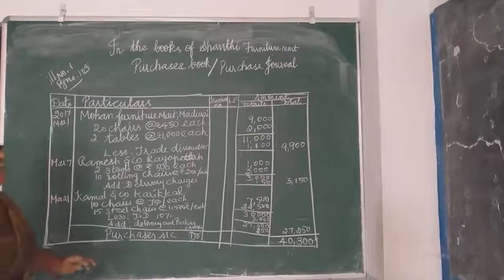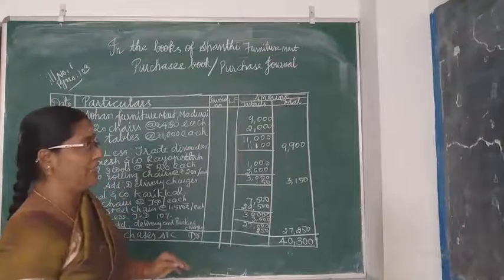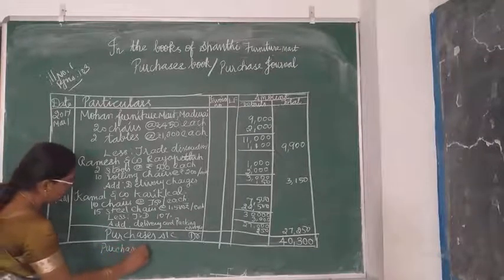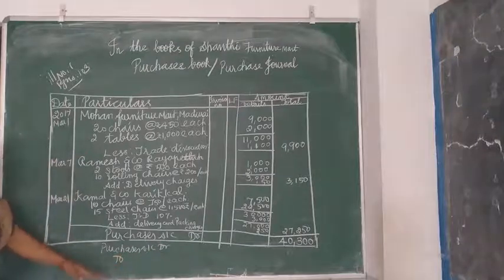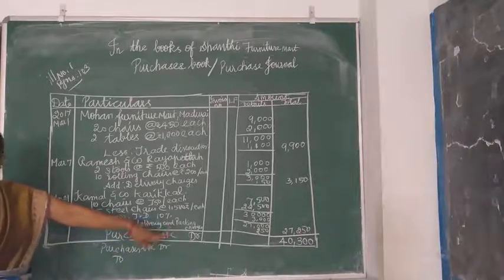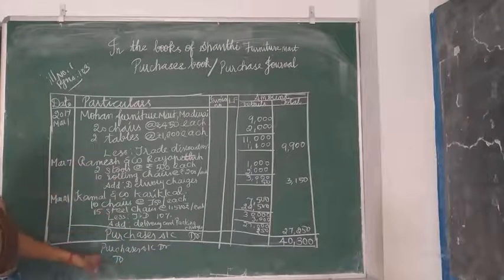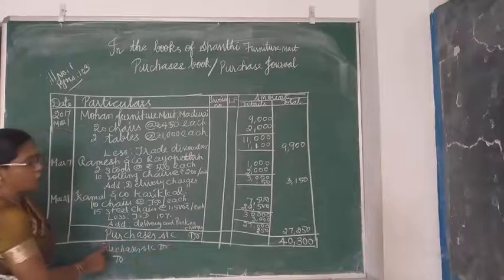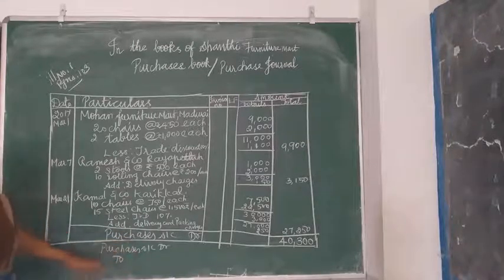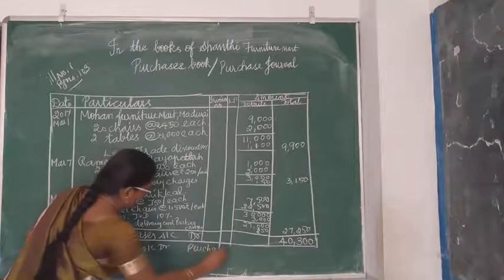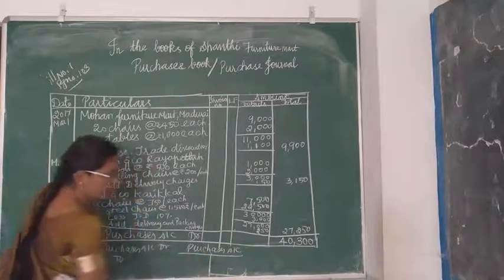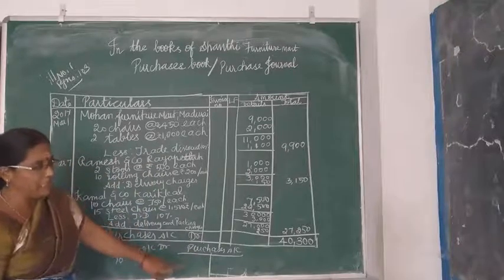For your identification, I will explain the journal entry for purchases. For a credit purchase, the journal entry is: Purchases Account debit, to Party Account credit — whether it is Mala, Sita, Selva, or any supplier. Purchases account should be debited. So purchases account debit to parties. Here we write 'debit' because purchases account is debited when posting to the ledger.